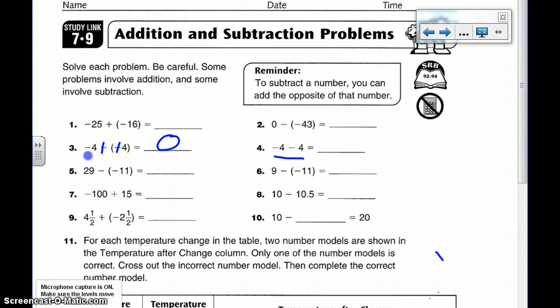If I look over here, same thing, I have to change both the signs. So I change that subtraction sign to an addition, that +4 to a -4, and it's -4 + (-4), which is -8.